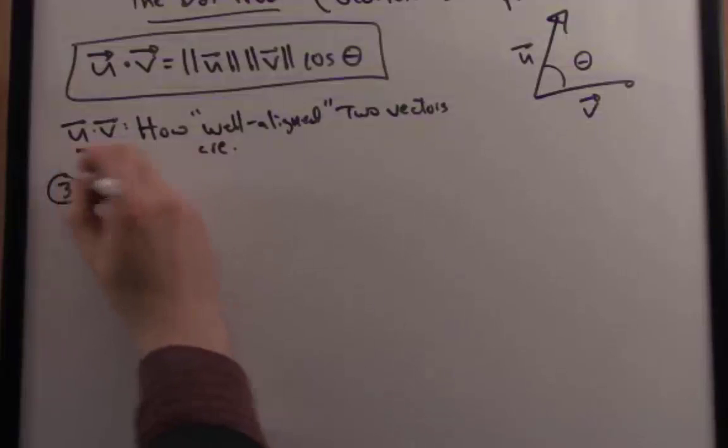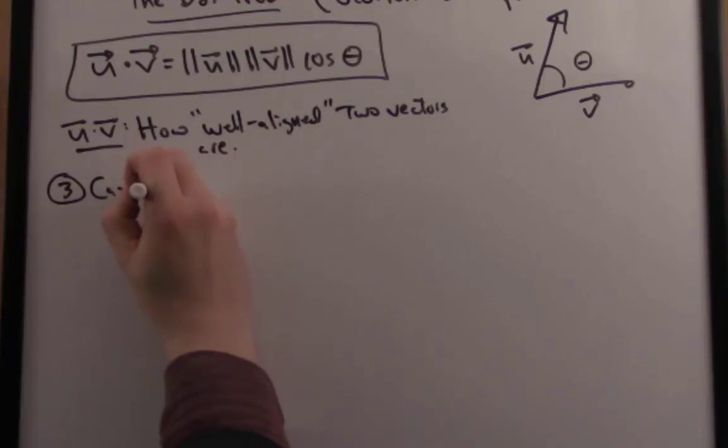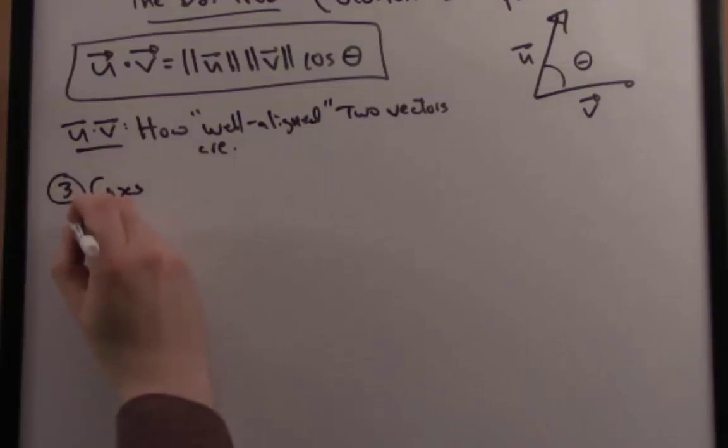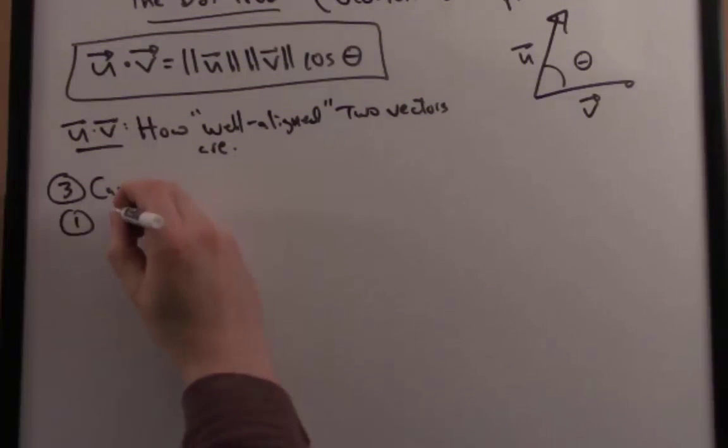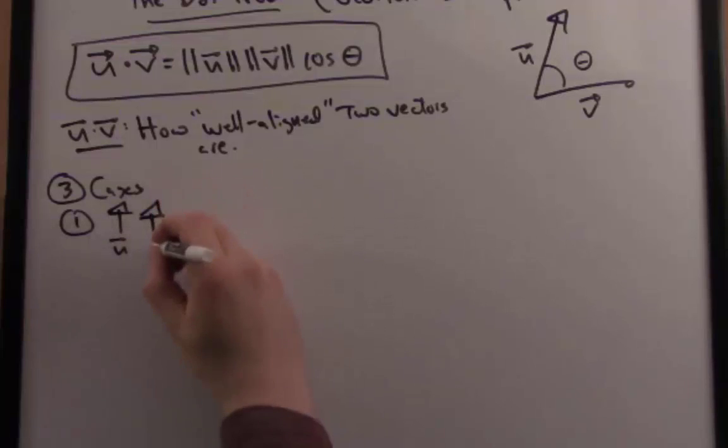Let's consider a few cases to illustrate that notion. Three cases. Number one, if we want to quantify how well aligned two vectors are, let's think of a nice simple case. What if the vectors are totally in alignment? In other words, if I have the vector u and the vector v and they're just parallel.